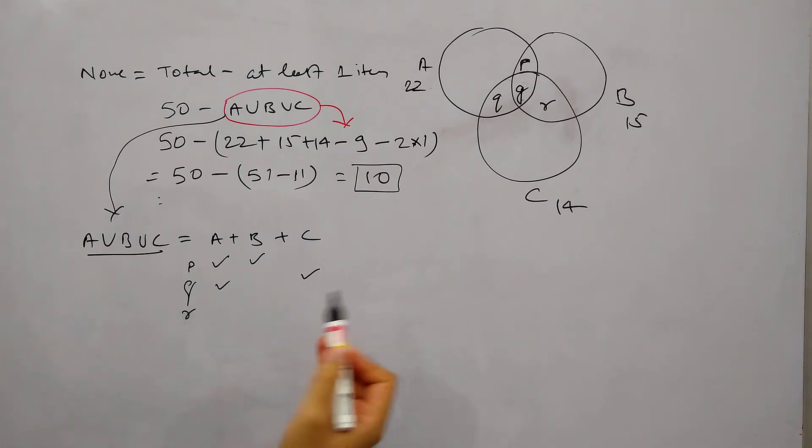So this P, Q, R is getting added twice while we are adding A, B and C, these three are also getting added twice. So we need to remove their one occurrence, so to remove their one occurrence we can simply subtract P plus Q plus R from A B C.